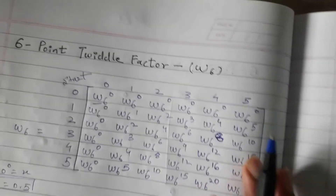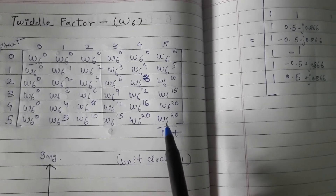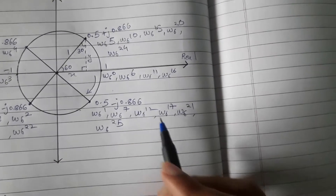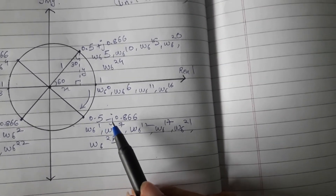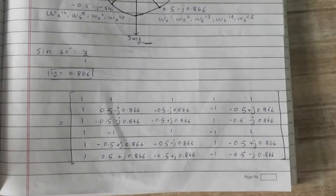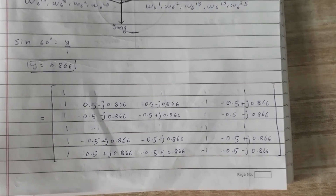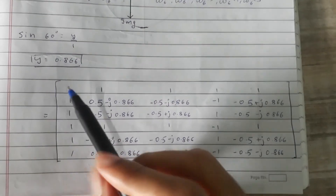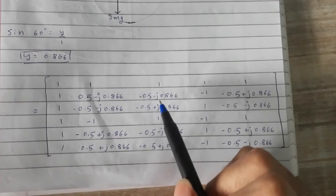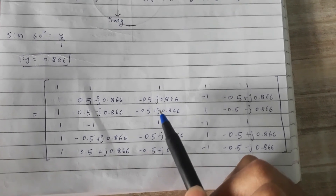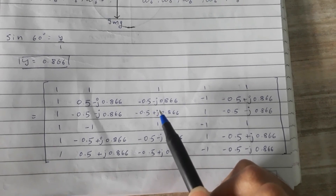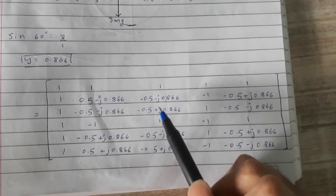So like this, for W6 raised to 0, W6 is 1, we wrote here. Similarly you can find all these points in this diagram. Our last point W6 raised to 25 will be 0.5 minus j0.866. Likewise, I wrote all these points. In the exam it is very easy to remember all these points, so no need to memorize the 6-point twiddle factor. Thank you.